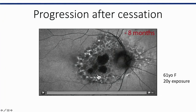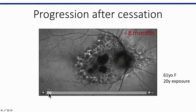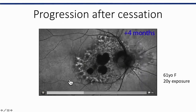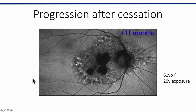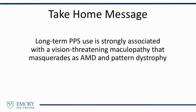So what happens when these patients stop taking this medication? If you focus on the areas of atrophy, this is eight months prior to cessation of the drug. Then four months after stopping the drug, and then 11 months after stopping the drug. From our limited data — we followed about 11 of these patients past the year — we do find that areas of atrophy do seem to increase.